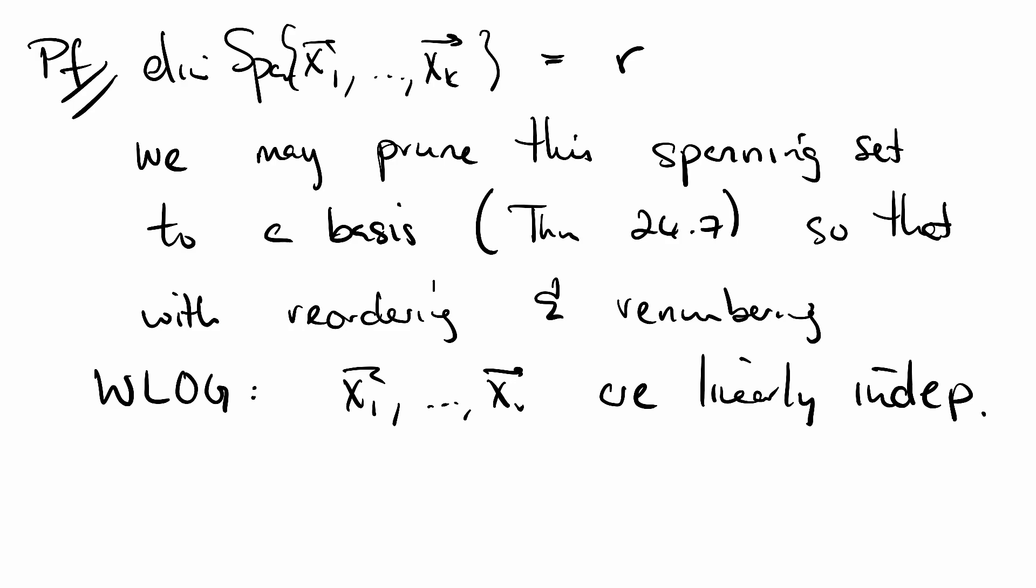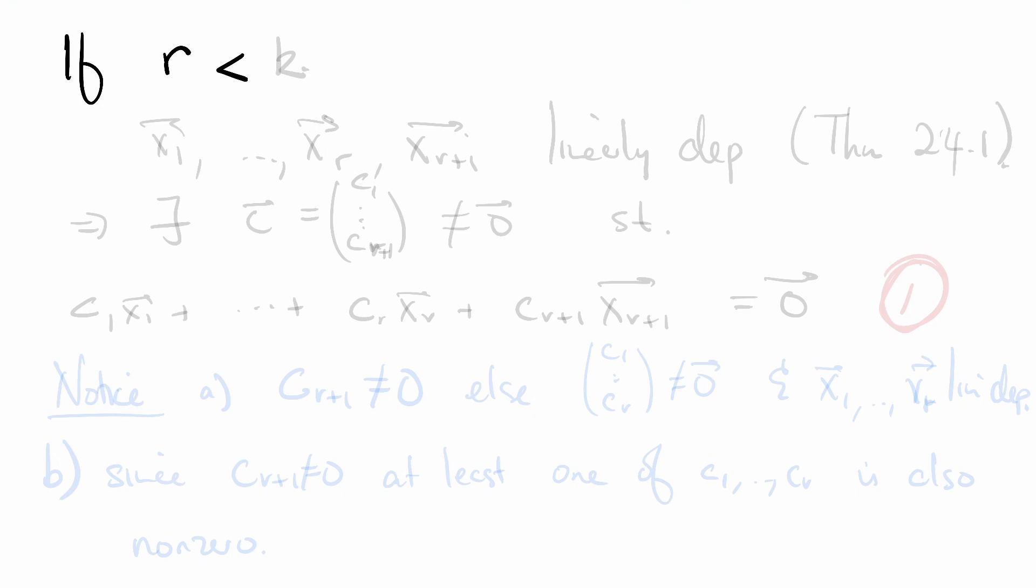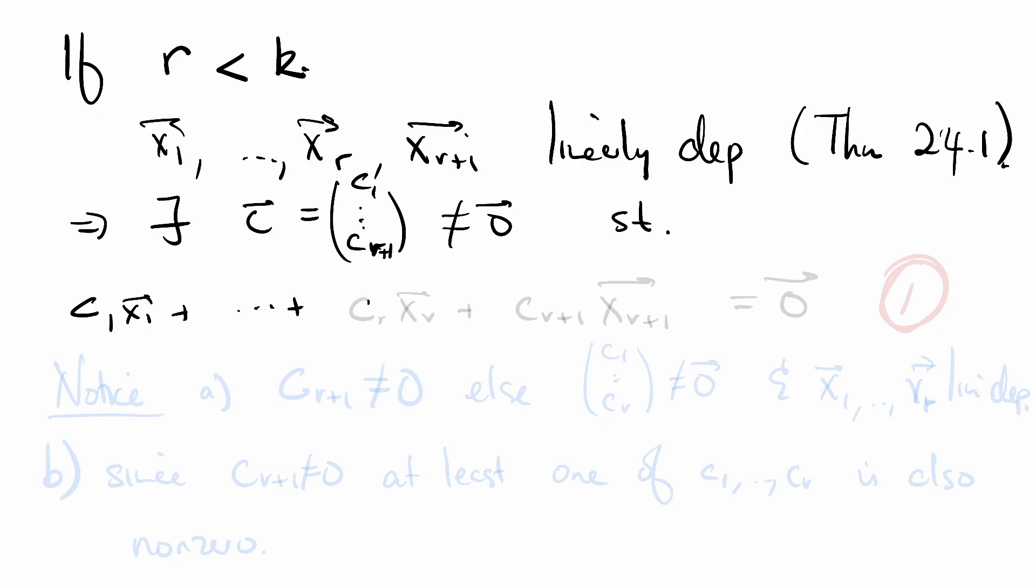We're going to proceed by contradiction. Assume to the contrary that r is strictly less than k. Then this means that x₁ through xᵣ, and then if we add on another vector xᵣ₊₁, this would be linearly dependent. This is by Theorem 27.1. What does it mean to be linearly dependent? This means that there exists a vector c₁ through cᵣ, which is non-zero, such that c₁x₁ plus through cᵣxᵣ plus cᵣ₊₁xᵣ₊₁ equals the zero vector. Let's call this equation 1.